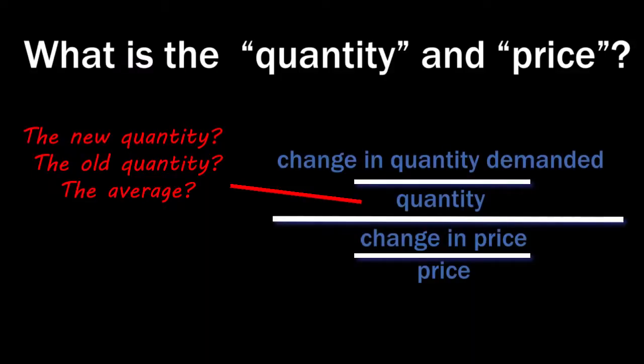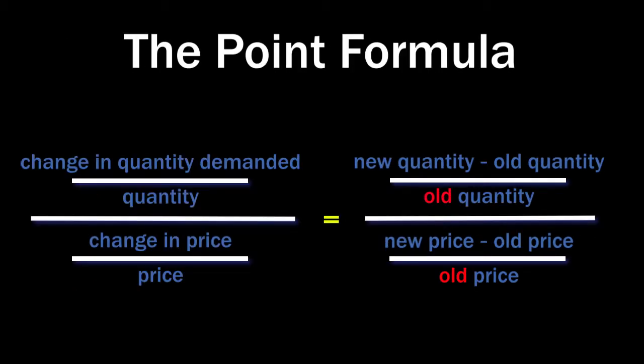Where the formula mentions the quantity, does that mean the new quantity, the old quantity, or what? The same question applies to the price. One common approach, sometimes called the point formula, is to use the old or starting quantity and price. Using that approach, going from point A to point B,